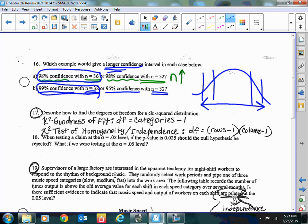Number 17: Describe how to find degrees of freedom for a chi-squared distribution. For a goodness of fit, the degrees of freedom is categories minus one. And the chi-squared test of homogeneity or independence is rows minus one times columns minus one.